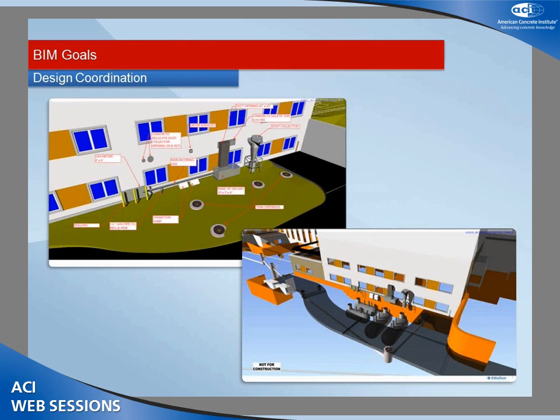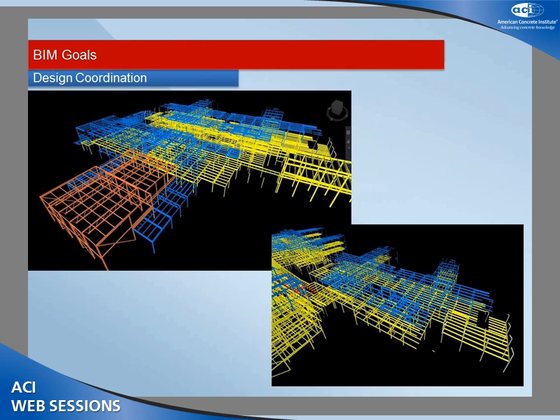Here's a quick example of some design coordination. You get complexity managing many different systems around the same zone. This is a precast building — those are precast panels on the exterior. We had to have all the holes cut for the various systems in the exact correct location when the panels came to the job site. Using the 3D systems, you can actually visualize how these things are going to come together and make sure they're going to fit.